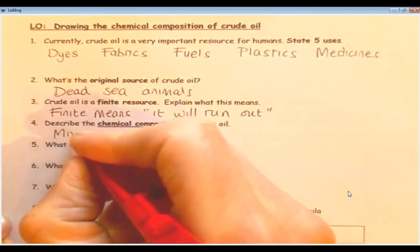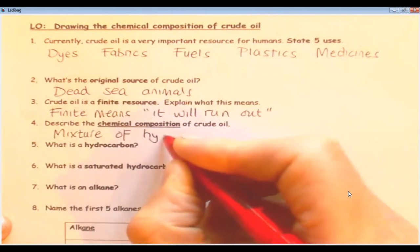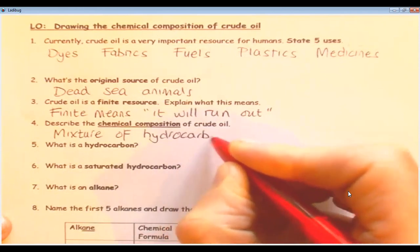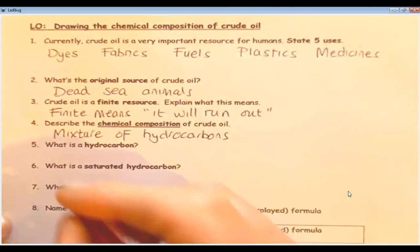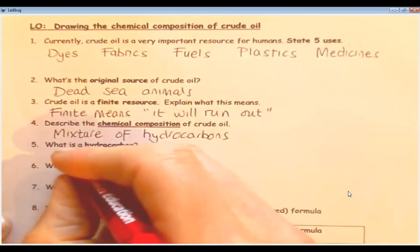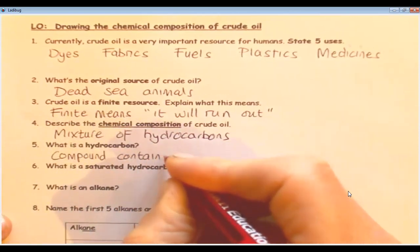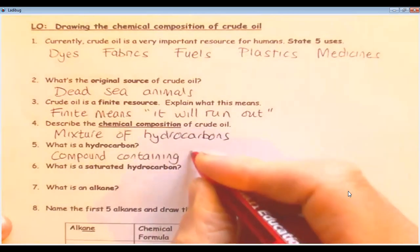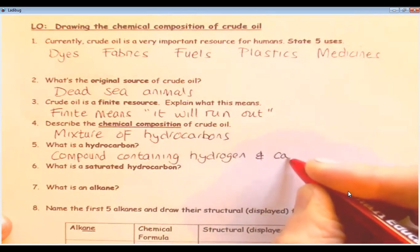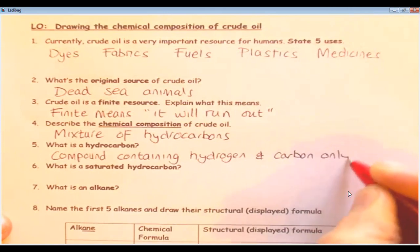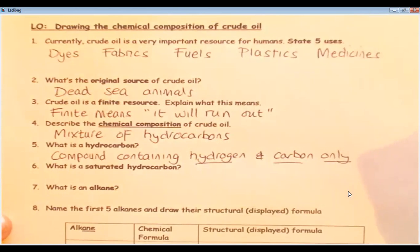So question four says, describe the chemical composition of crude oil. I've already told you this. It's a mixture of hydrocarbons. Lots of different length hydrocarbons. What is a hydrocarbon? Compound containing hydrogen and carbon only. The only is an important word there. So it's hydrogen and carbon only.